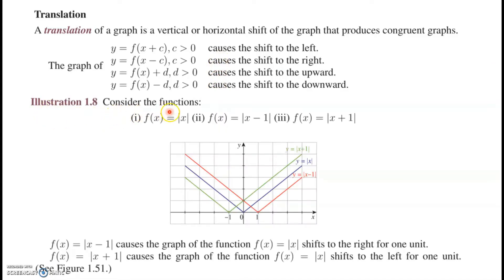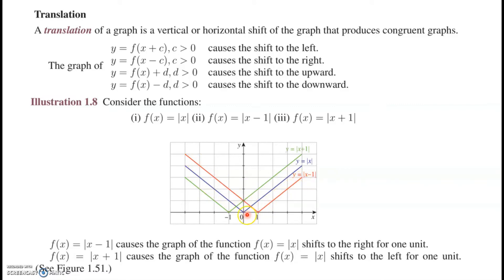In Illustration 1.8, consider f(x) = |x|, f(x) = |x−1|, and f(x) = |x+1|. The blue graph is f(x) = |x|. The red line is |x−1|, which has shifted to the right. The third function, |x+1|, has shifted to the left.